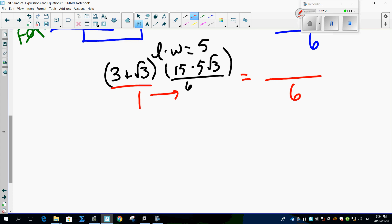Up top here, look, you just have to do FOIL. 3 times 15, well, that's 45. That's not so bad. Outer, which is 3 times minus 5 root 3, which is minus 15 root 3.